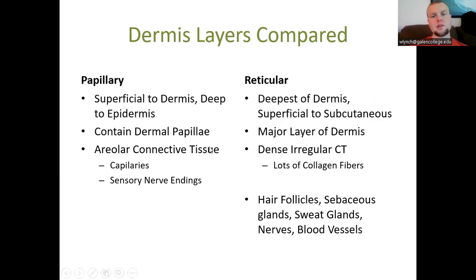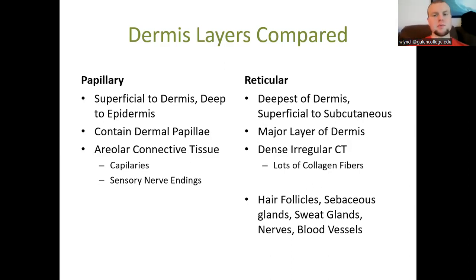The reticular layer is attached to the papillary layer on its superficial side and to the subcutaneous layer on its deep side. It is made of dense irregular connective tissue — very distensible, with lots of elastin and collagen fibers allowing movement in different directions without compromising structure. Here we find hair follicles, sebaceous glands, sweat glands, nerves, and blood vessels.